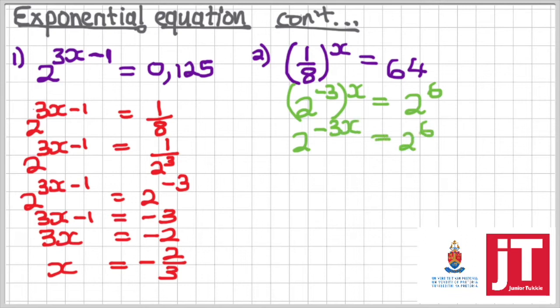Doing away with the bases, we remain with negative 3x is equals to 6. Solving for x, we get our x value being equal to negative 2.